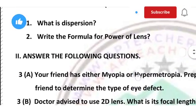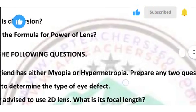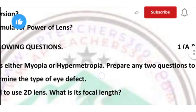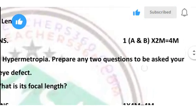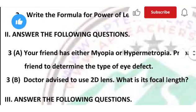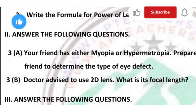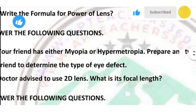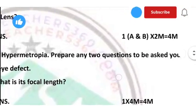Your friend has either myopia or hypermetropia. Prepare any two questions to be asked to your friend to determine the type of eye defect. Doctor advised to use a 2D lens — what is its focal length? This is a two-marks question.